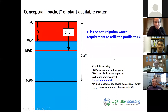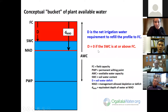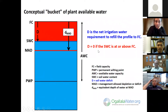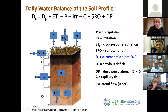The deficit is compared to the management allowed depletion, which can be converted to an equivalent depth of water. If the deficit is zero, then the soil water content is at field capacity and you don't need to irrigate. While if the deficit goes past the MAD, then the assumption is that the plants become stressed.